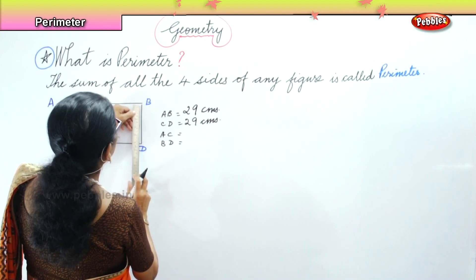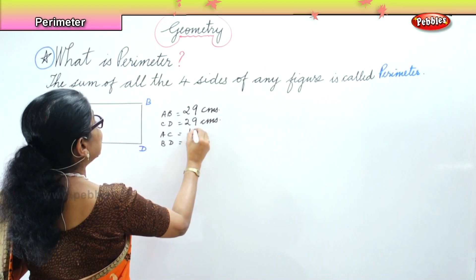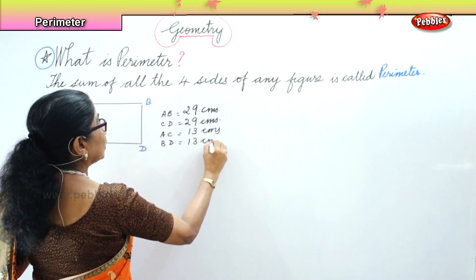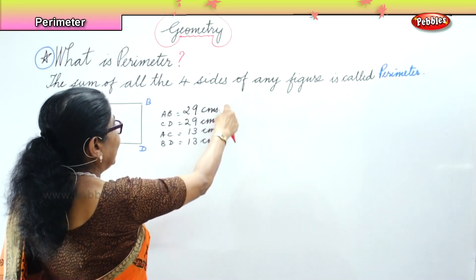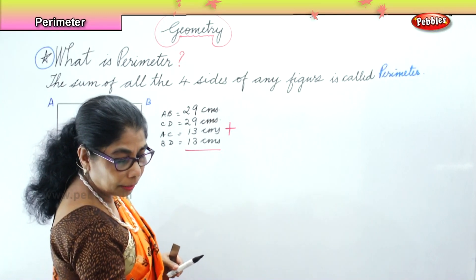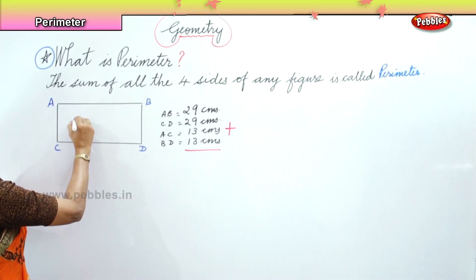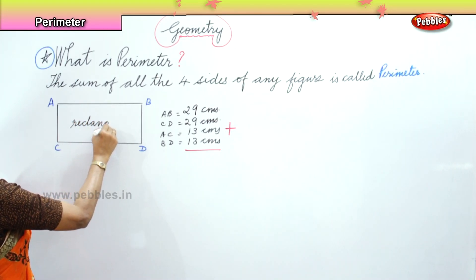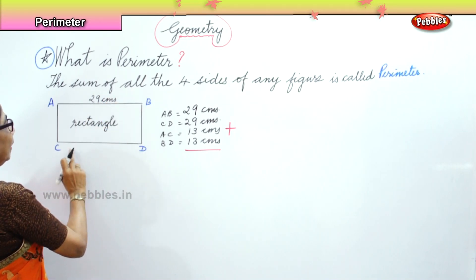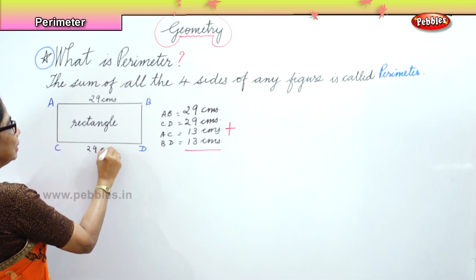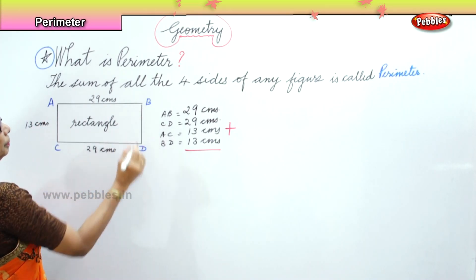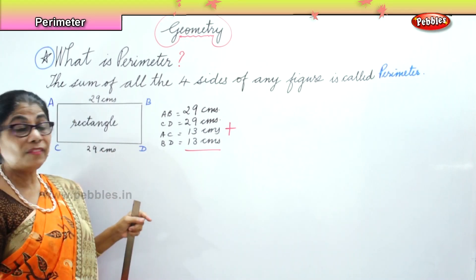Now when I add up all of these — this plus this plus this plus this — the sum of all this will give me the perimeter of this rectangle. So this is a rectangle. A-B is 29 cm, C-D is 29 cm, A-C is 13 cm, and similarly B-D is also 13 cm.